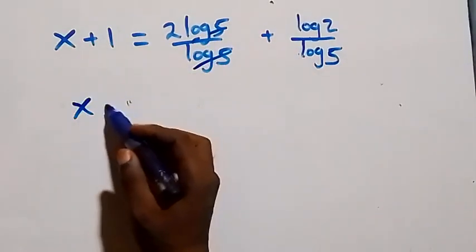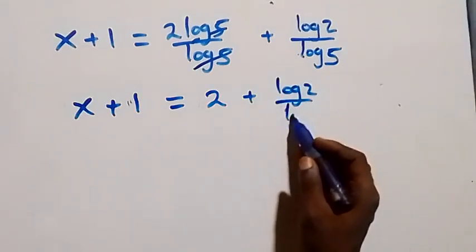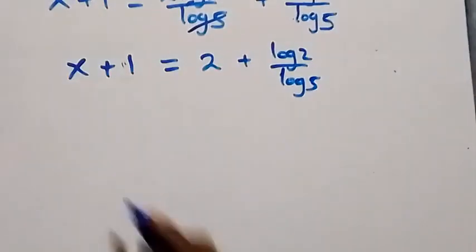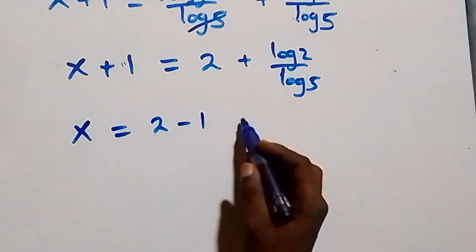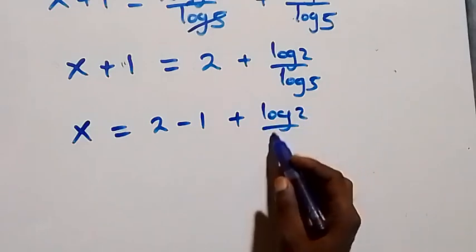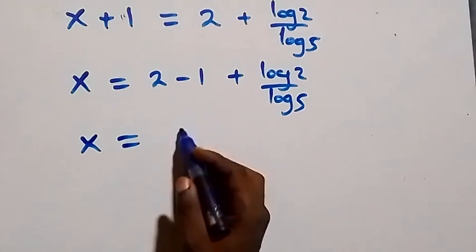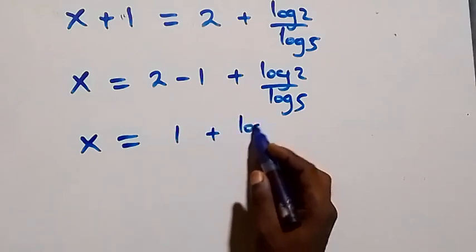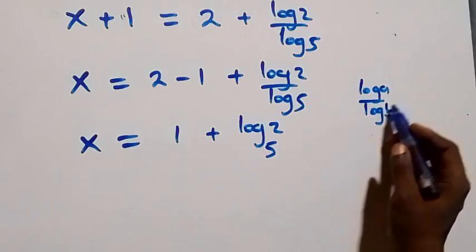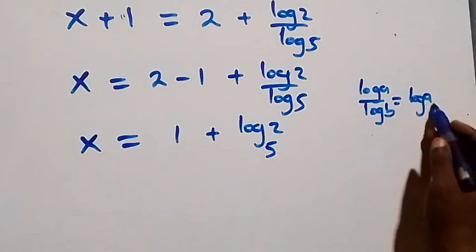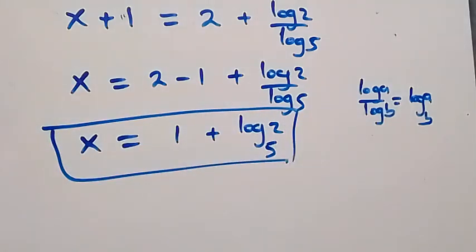Log 5 cancels each other and we have 2. So x plus one equals 2 plus log 2 over log 5. Taking 1 to the other side, x equals 2 minus 1 plus log 2 over log 5, which gives x equals 1 plus log 2 to base 5, using the change of base formula: log a over log b equals log a to base b.